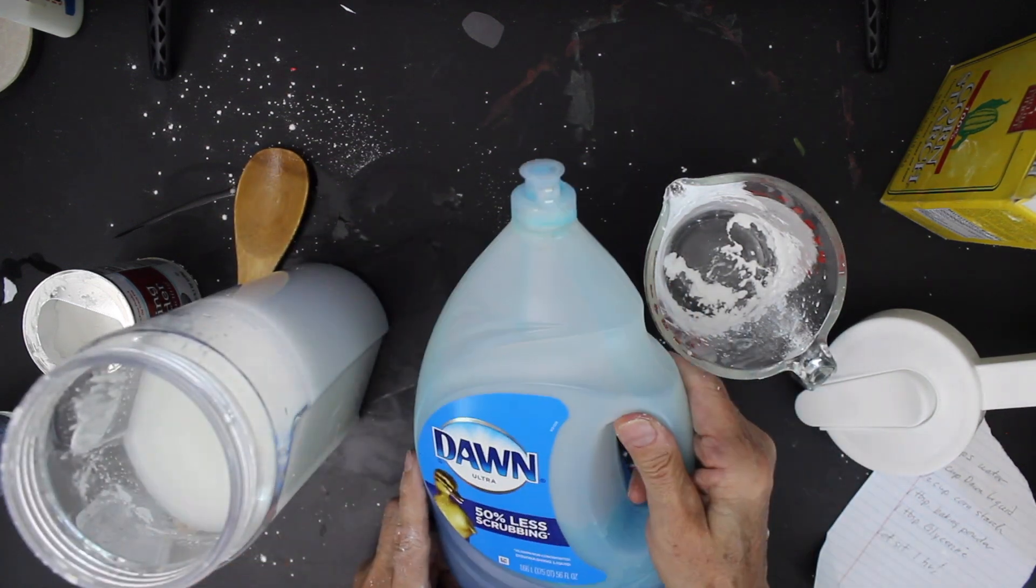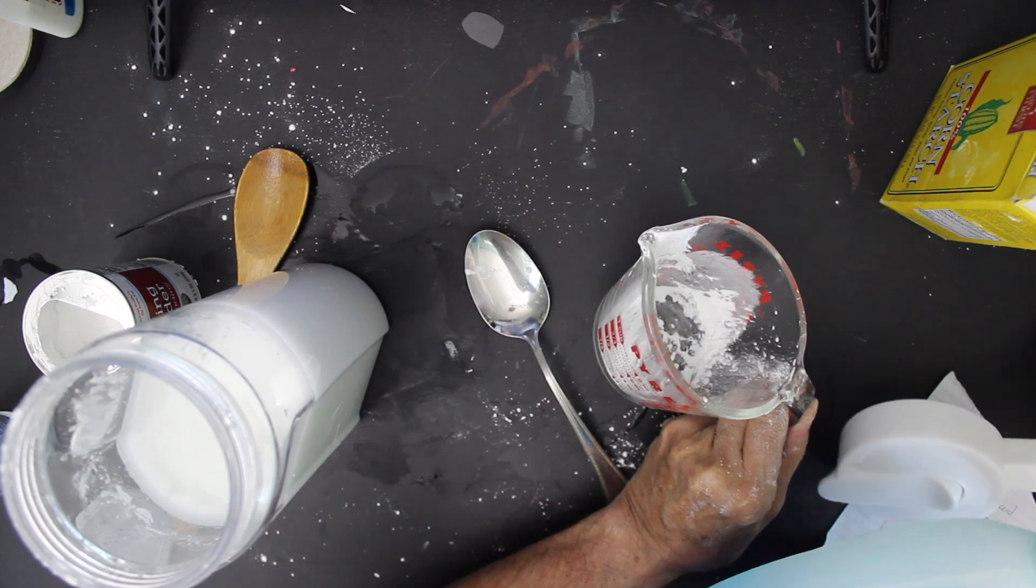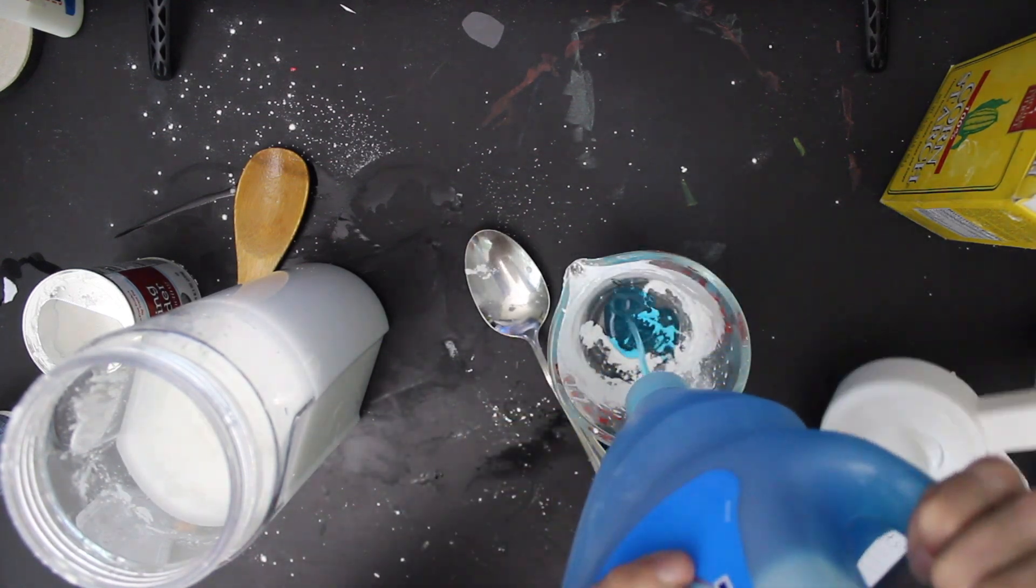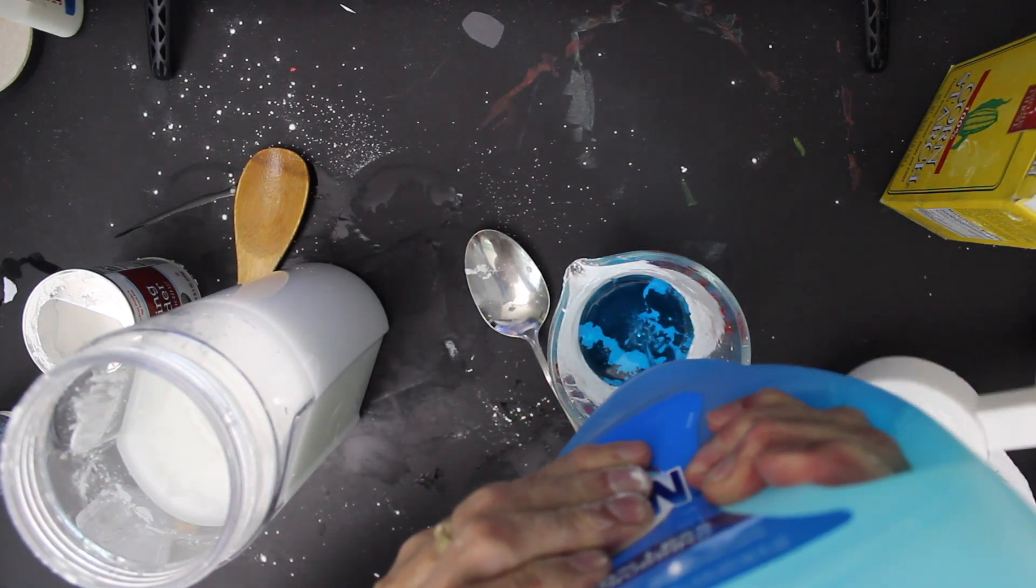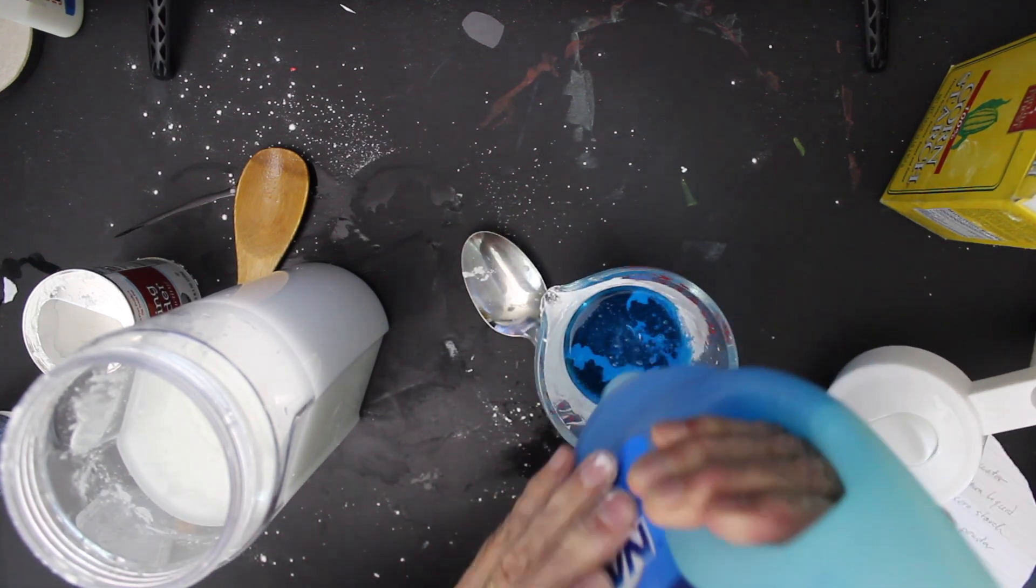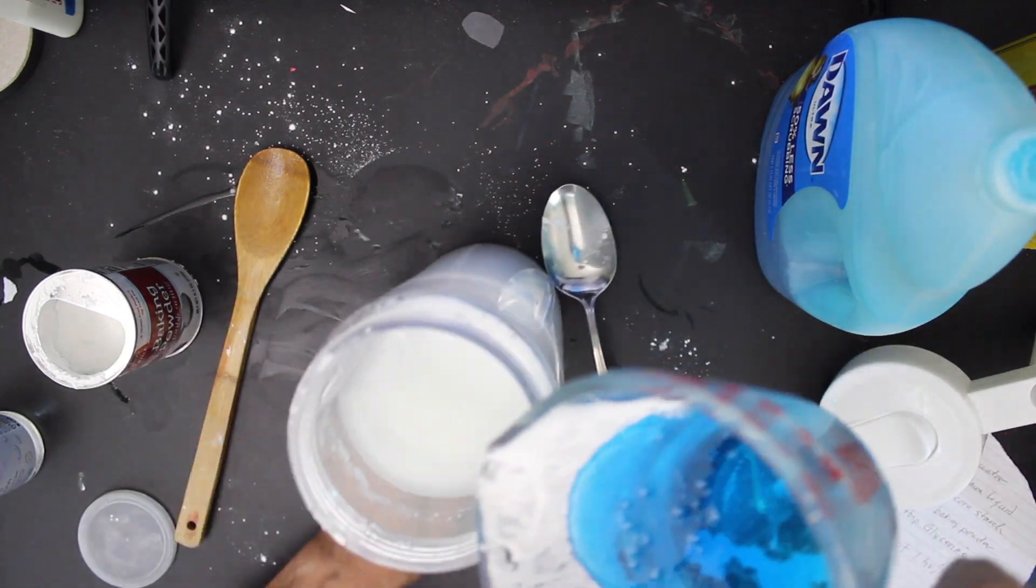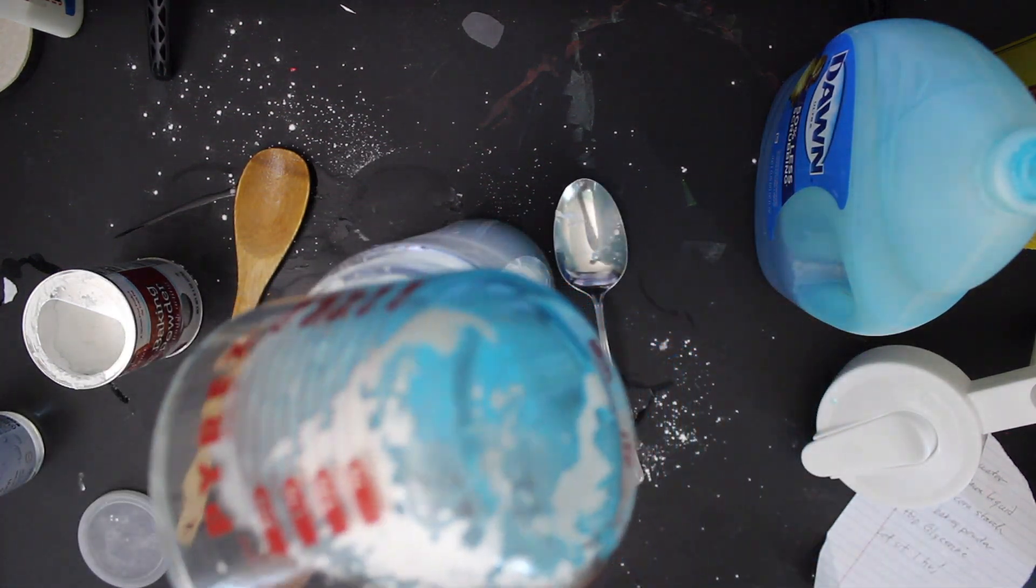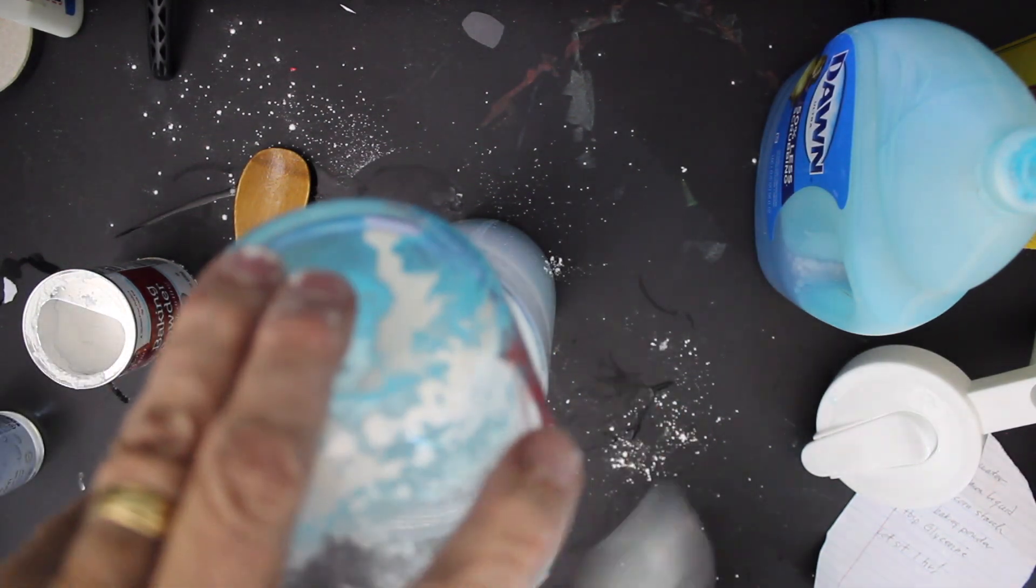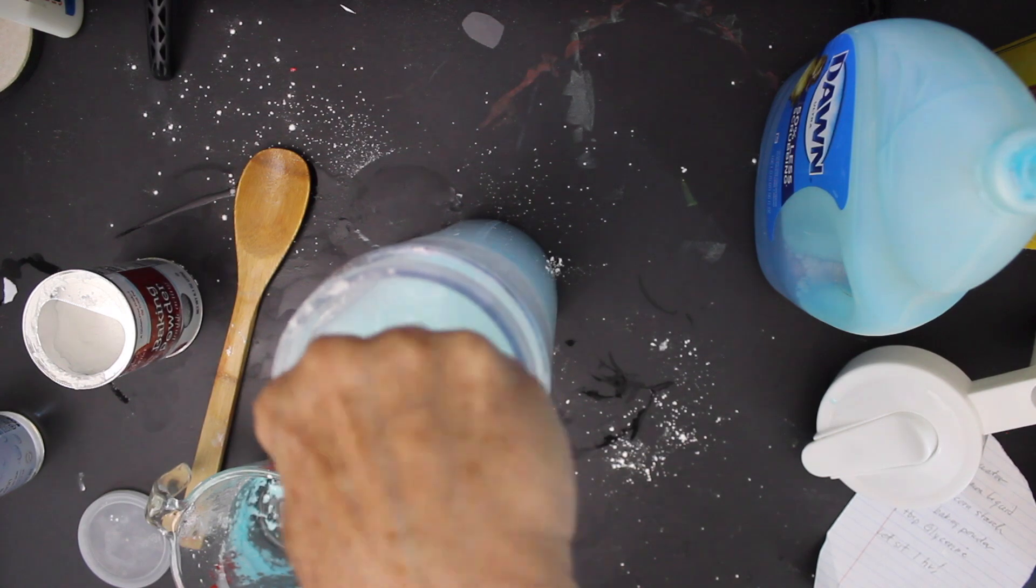Next, we've got the Dawn liquid. It doesn't have to be Dawn, but it's better if it is. It's just like the best detergent ever. I'm sure you know that, and squirt that in. About a quarter of a, half a cup rather, half a cup of Dawn liquid. And we'll pour that into the mixture. And that's good to the last drop there. Get all of that out of there.